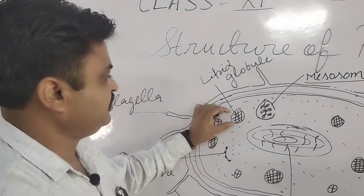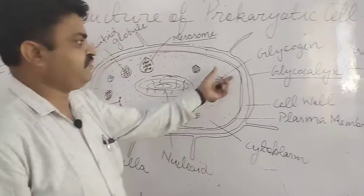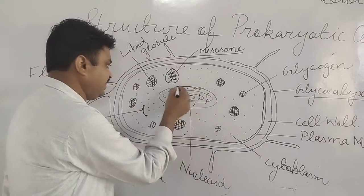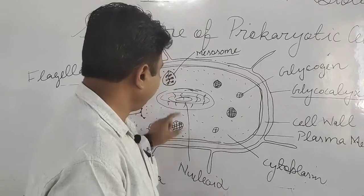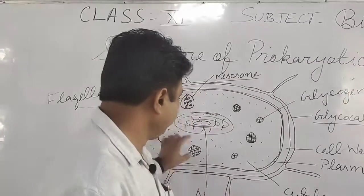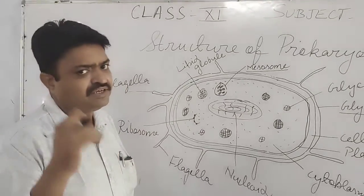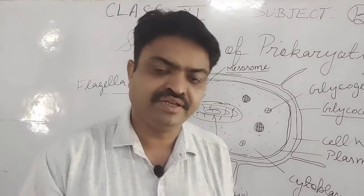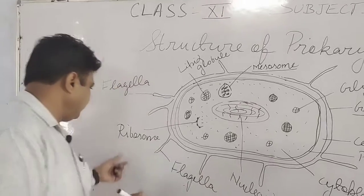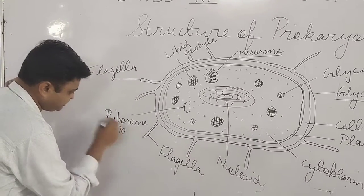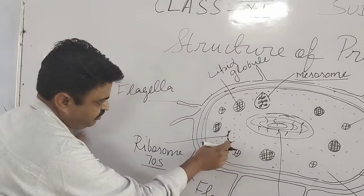With this, lipid globules are found, which collect lipid. There are also glycogen globules found. There is an indefinite nucleus — the nucleoid — which does not have a nucleolus. Ribosomes are also found in the bacterial cell, and their main function is protein synthesis. These are 70S ribosomes found inside the cytoplasm.